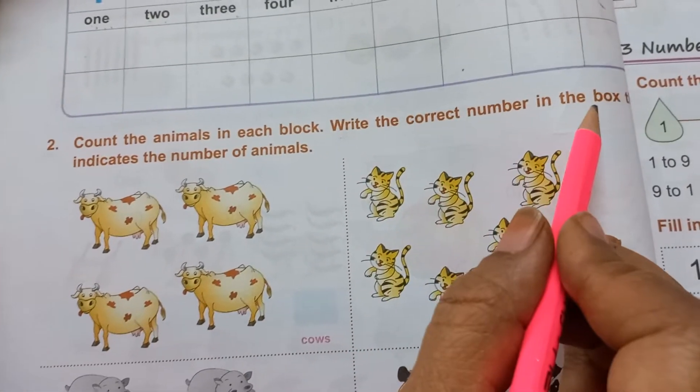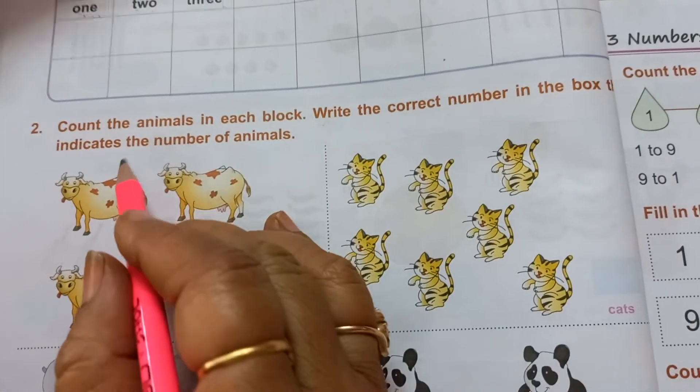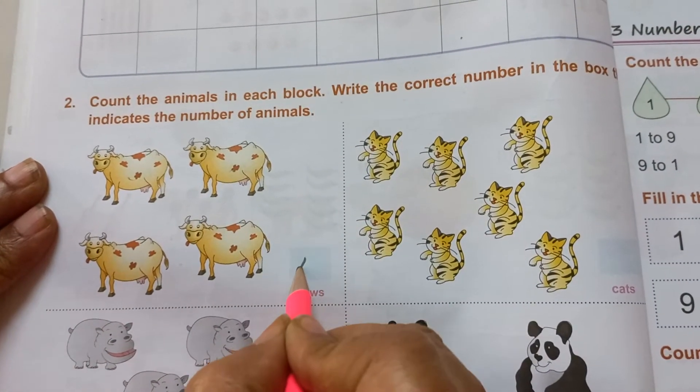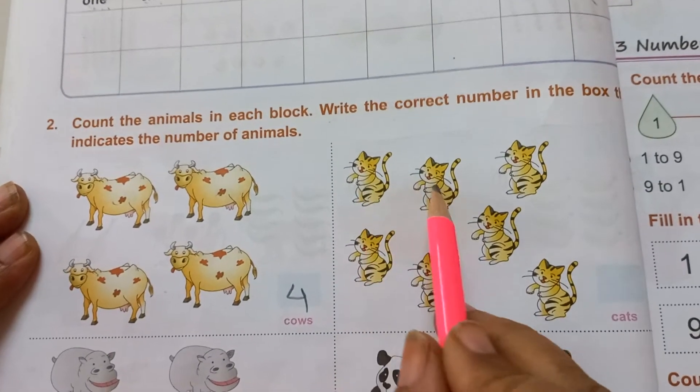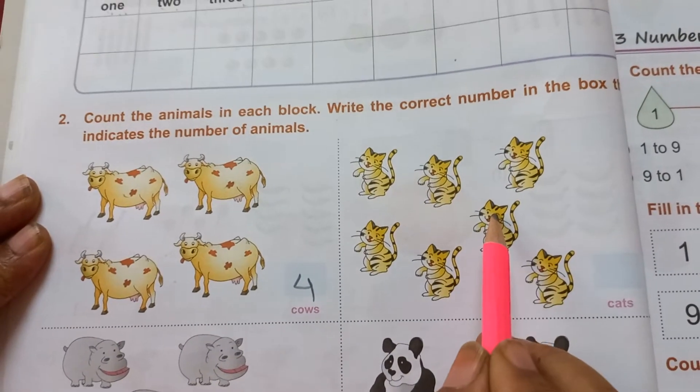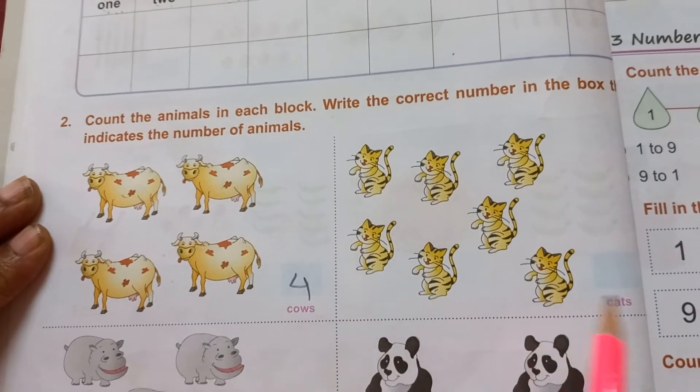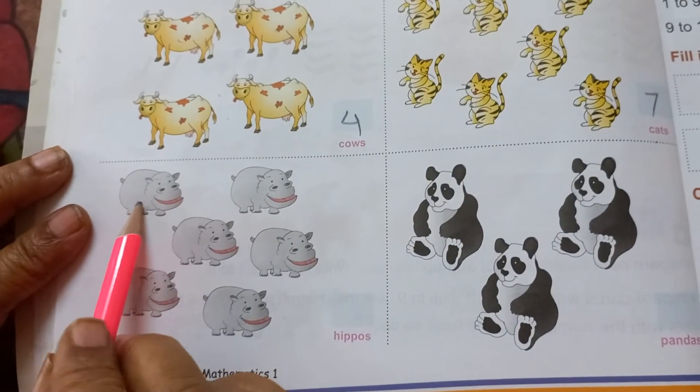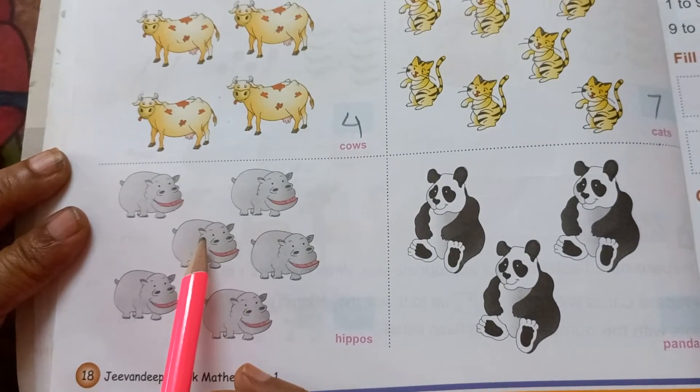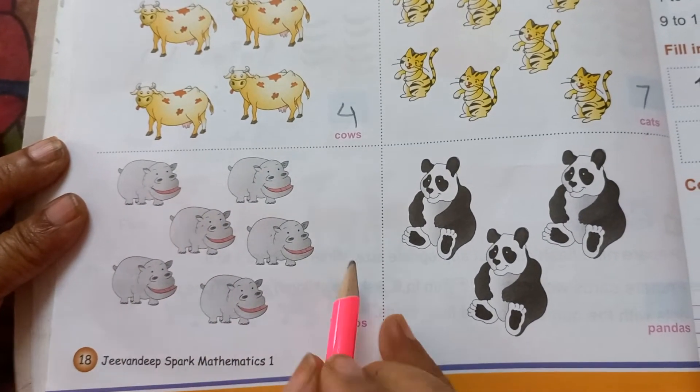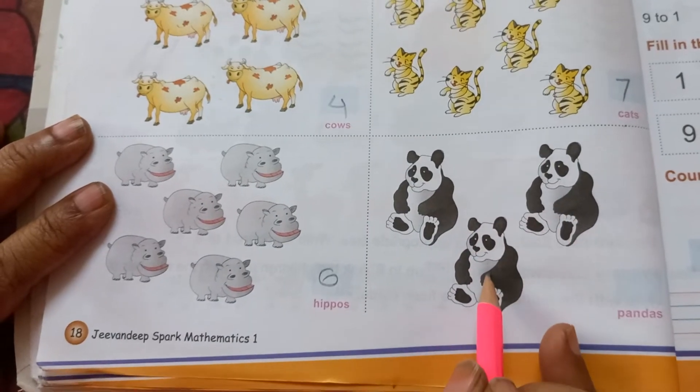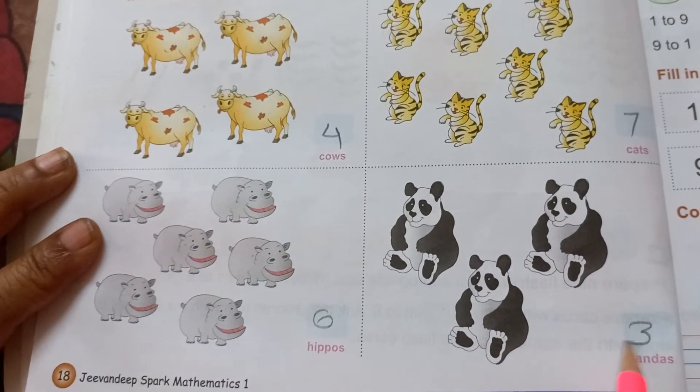Write the correct number in the box to indicate the number of the animal. One, 2, 3, 4. So here 4 cows. One, 2, 3, 4, 5, 6, 7. So here you have to write 7 cats. How many pigs are there? One, 2, 3, 4, 5, 6. So 6 hippos. Then 1, 2, 3 pandas. Like this you have to solve it.